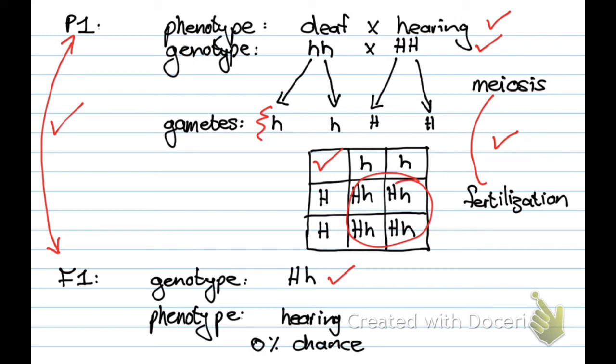And then remember that you have to look back to your question and answer the question. In this case they asked, show the percentage chance of them having a deaf child. And in this case it is zero percent. That means there's seven places for you to get a mark.